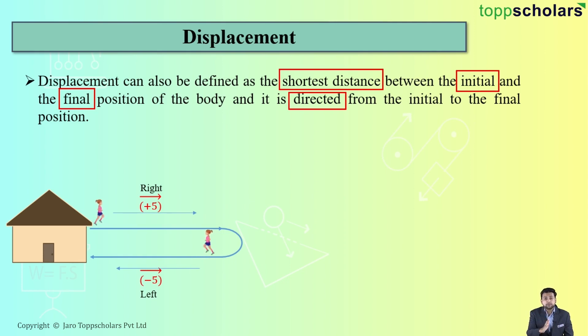But students, are you observing something? While moving from the house to a certain point, the displacement is denoted as plus 5, and while coming back it is denoted as minus 5. Why? Because displacement always denotes the direction.